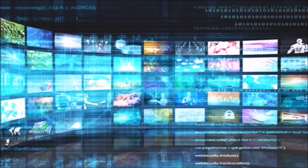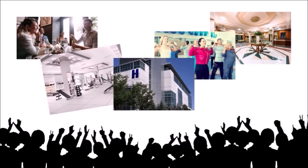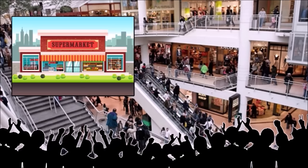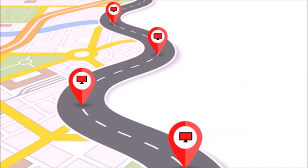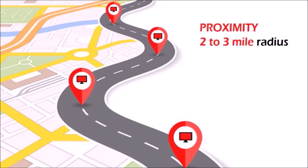Let's use a 10-screen network as an example. First, you need to find 10 high traffic locations where people dwell for a period of time, such as restaurants, coffee shops, hotel lobbies, gyms and spas, hospitals and clinics, shopping malls, supermarkets and convenience stores, and other such locations — all within a two-mile radius from one another. Proximity is important, as clients won't advertise in areas they don't serve. This means your entire network of 10 screens should be within a 2 to 3-mile radius.